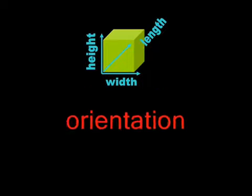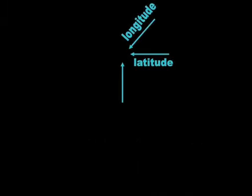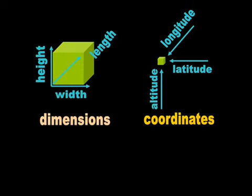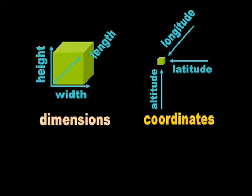Dimensions point outwards from an object. The three coordinates are known as longitude, latitude, and altitude. Unlike dimensions, they are used to specify location and point inwards towards the object. Dimensions and coordinates are conceptually static.